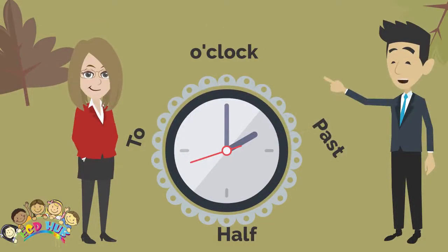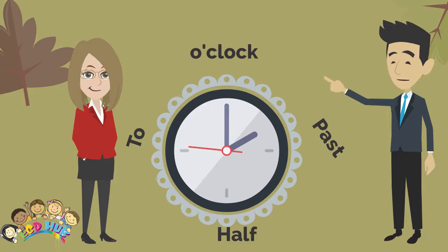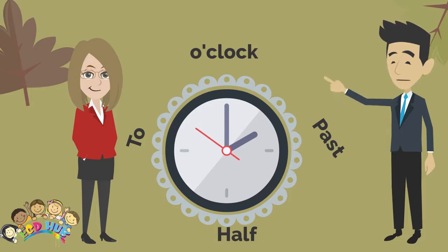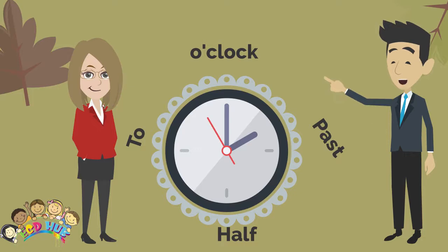Look at the clock. We use o'clock at a full hour. We use 'past' to say times after the hour. We use 'half past' to talk about any time ending in 30 minutes. We use 'to' for saying times before the hour.